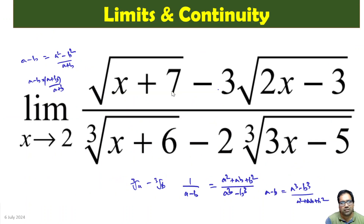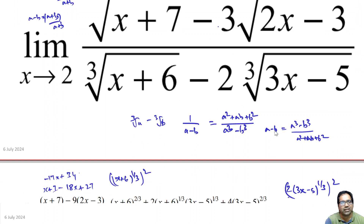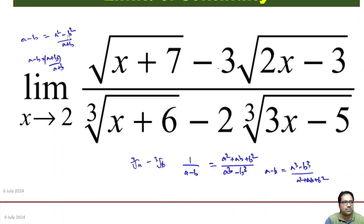This is a straightforward problem. The key is to multiply with the respective conjugates: for cube-root(x) minus cube-root(y), use the cube conjugate a²+ab+b²; for square-root(x) minus square-root(y), use a minus b = (a²-b²)/(a+b). We used both identities here because the expression had both square roots and cube roots.